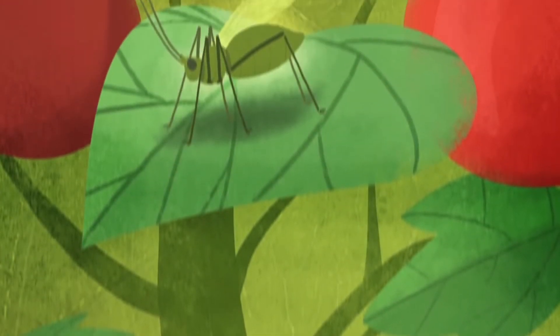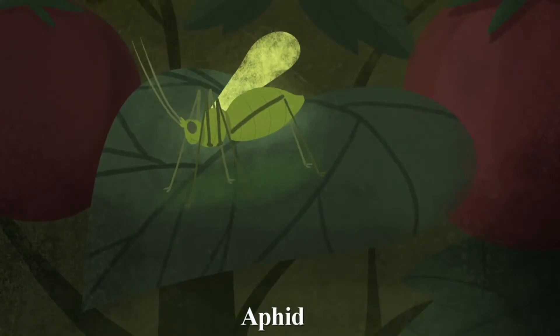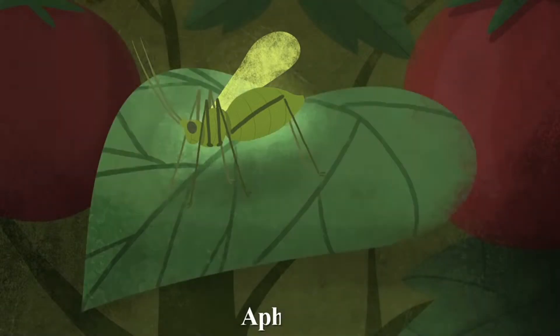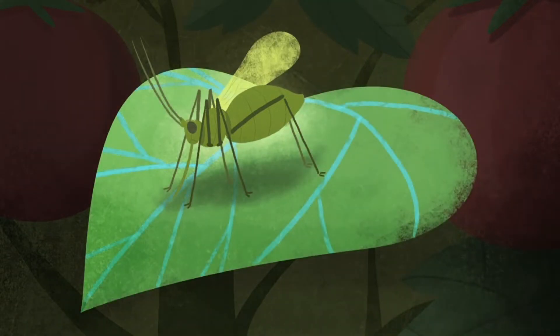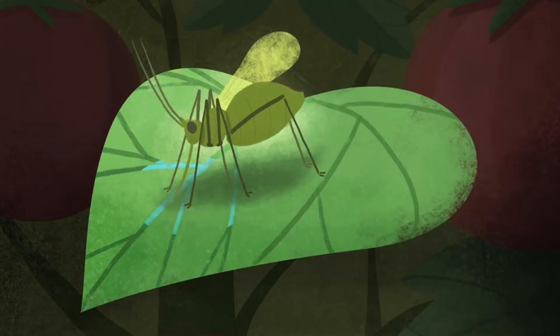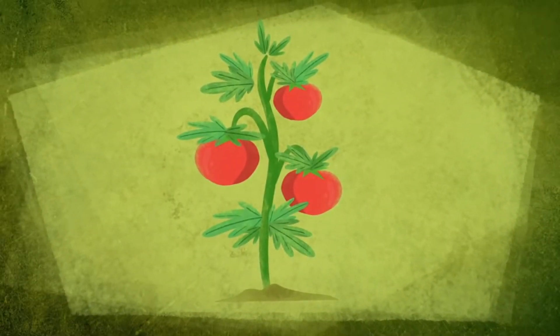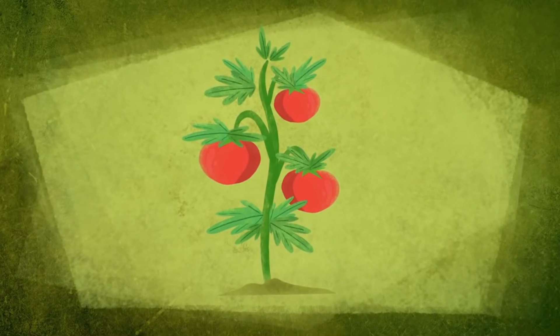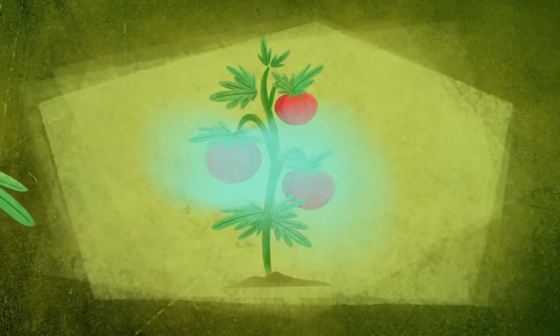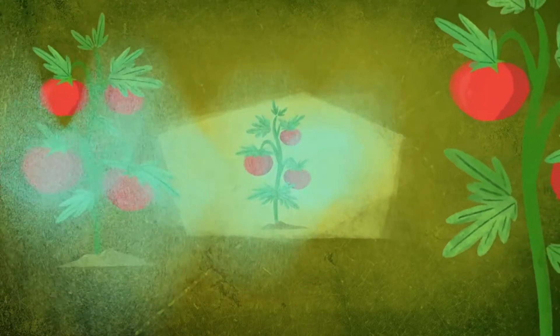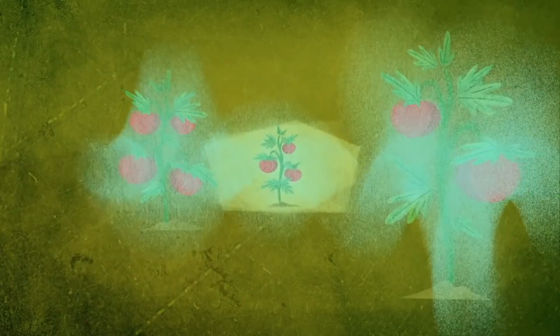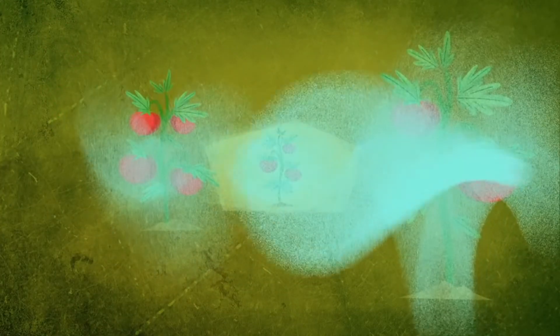This is a tomato plant, and this is an aphid slowly killing the tomato plant by sucking the juice out of its leaves. The tomato is putting up a fight, using both physical and chemical defenses to repel the attacking insects. But that's not all. The tomato is also releasing compounds that signal nearby tomato plants to release their own insect repellent.